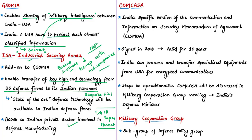ComCASA was signed in 2018 but is yet to be operationalized. ComCASA is an India-specific version of the Communications and Information on Security Memorandum of Agreement which the United States has with other countries. It was signed in 2018 and is valid for a period of 10 years. The special feature of this agreement is that it allows India to procure and transfer specialized equipment from the United States for encrypted communications — enabling India to purchase and use high-end secured communication equipment for defense purposes.